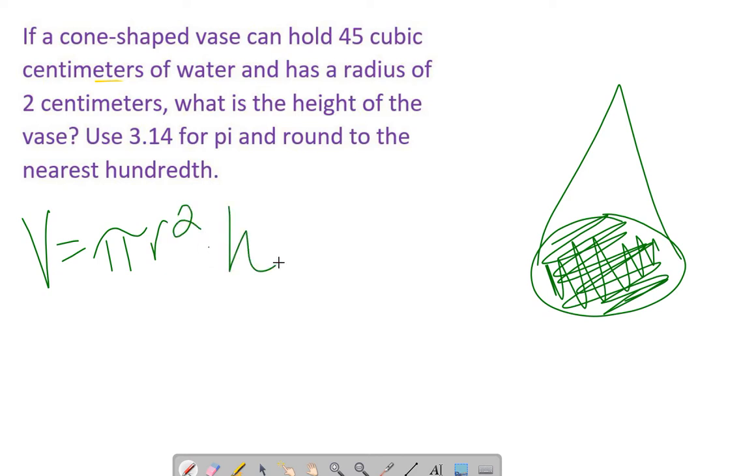Except if we do that, we'd have a cylinder. Anytime we have something that comes to a point like this, the formula involves dividing by three. A cone is one-third the size of a cylinder if the circular bases are equal. So always remember: if you see a point, divide by three in your formula.